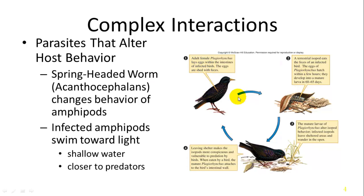A similar cycle involves a bird and terrestrial isopods. An adult female Plagiorchis lays eggs within the intestines of an infected bird, and its feces contain this pathogen. The pathogen affects terrestrial isopods that eat the feces; the eggs hatch within the isopod, causing it to move towards light or wander in the open. It then gets eaten by a bird and the process repeats. This is where infection affects the behavior of both parasite and host.